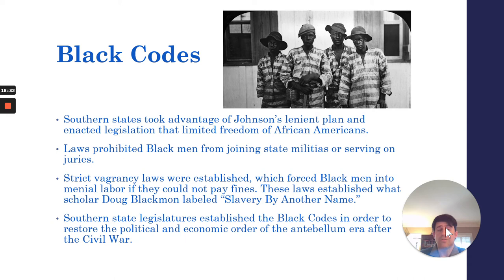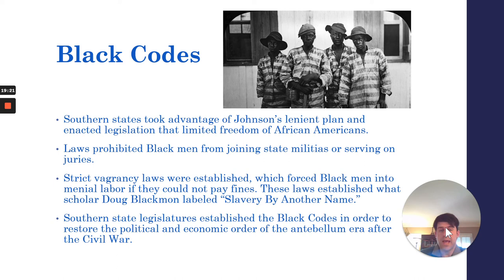One prominent scholar, Doug Blackman, labeled this system — the vagrancy laws as part of the Black Codes — as slavery by another name. Blackman wrote a nationally bestselling book published in 2008, a Pulitzer Prize winner, in which he examined the long-term impact of the vagrancy laws. He argued that this vagrancy law system was just another form of slavery and a way for Southern governments to continue to have menial labor performed by Black men without adhering to the 13th Amendment abolishing slavery.